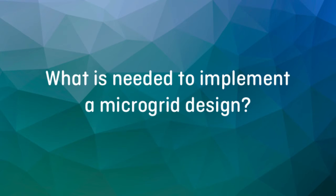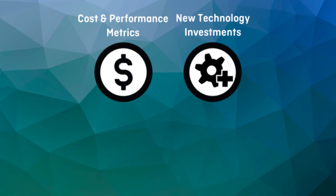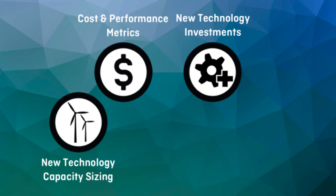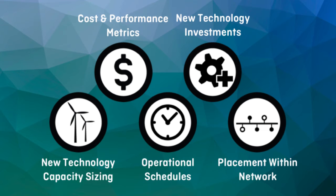Deploying distributed energy systems and microgrids is often a long and complex process, but the first step is to develop a feasible, actionable design. Specific information to assess the feasibility of a given design includes basic cost and performance metrics like total capital costs, net changes to annual operation costs, and the payback period for new investments. The portfolio of which new technologies should be installed and the capacities of each, information on how those technologies are dispatched under typical conditions, and for larger sites, where within their internal networks each DER will be placed.